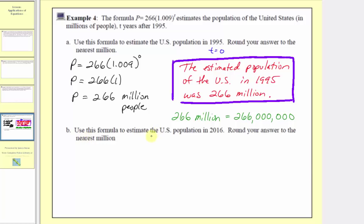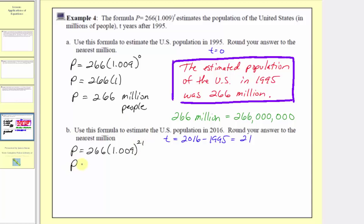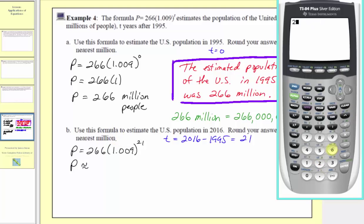For part b, we're asked to use the same formula to estimate the population in the year 2016. T is equal to the desired year 2016 minus the base year 1995, which equals 21. So we substitute 21 for t: p equals 266 times 1.009 raised to the power of 21. Using a calculator and rounding to the nearest million, we round to 321.